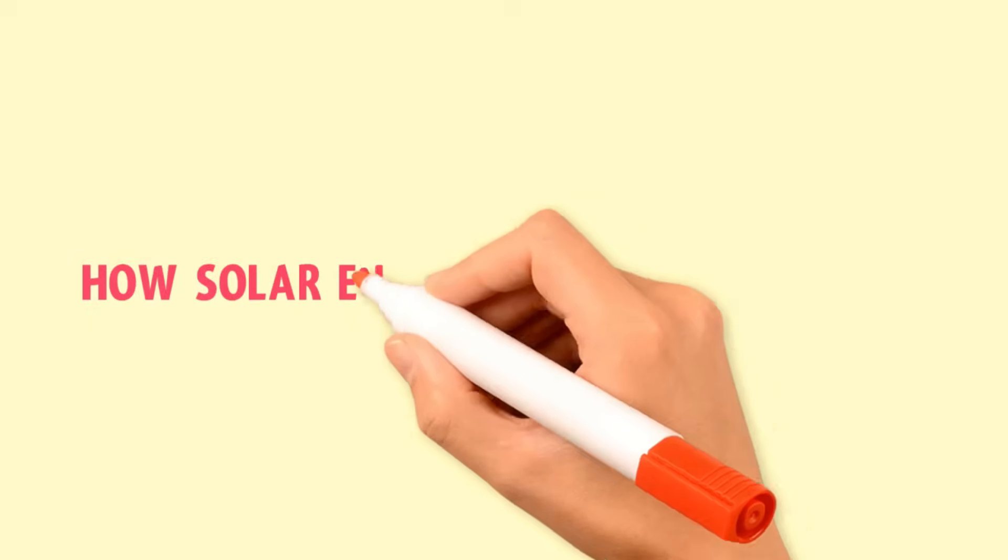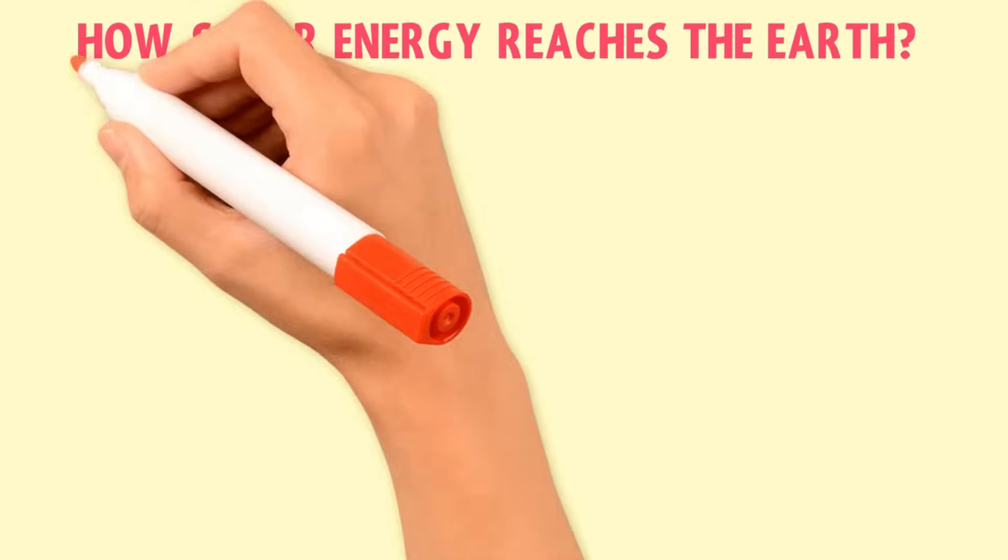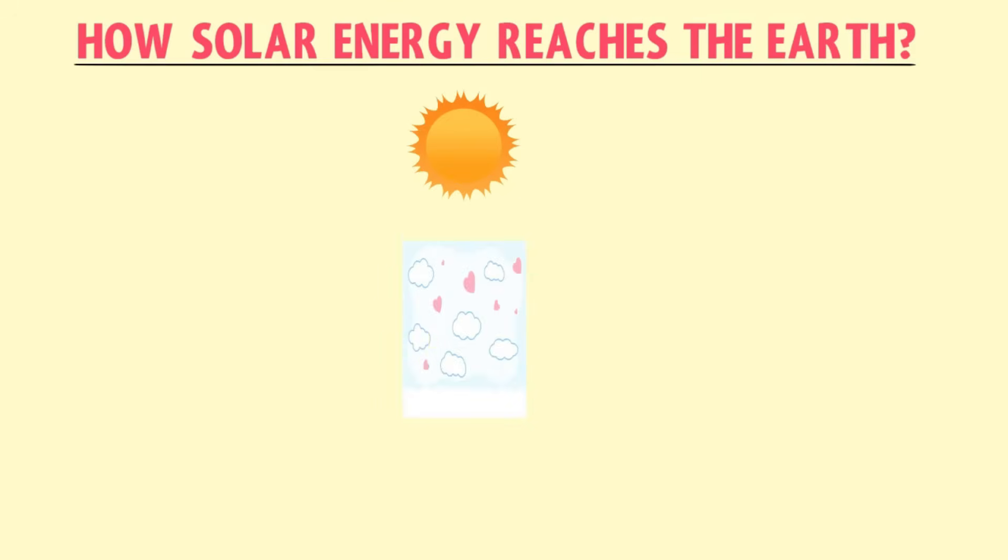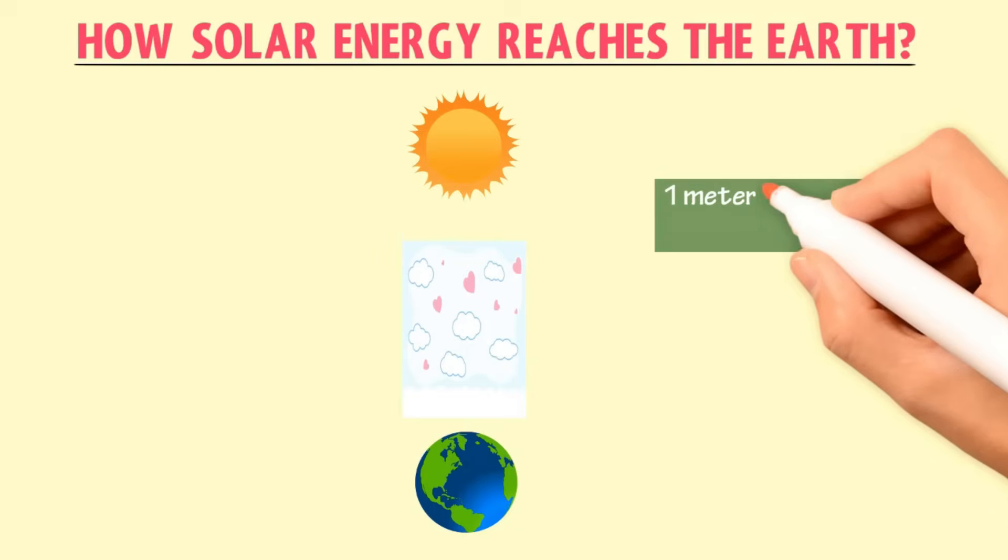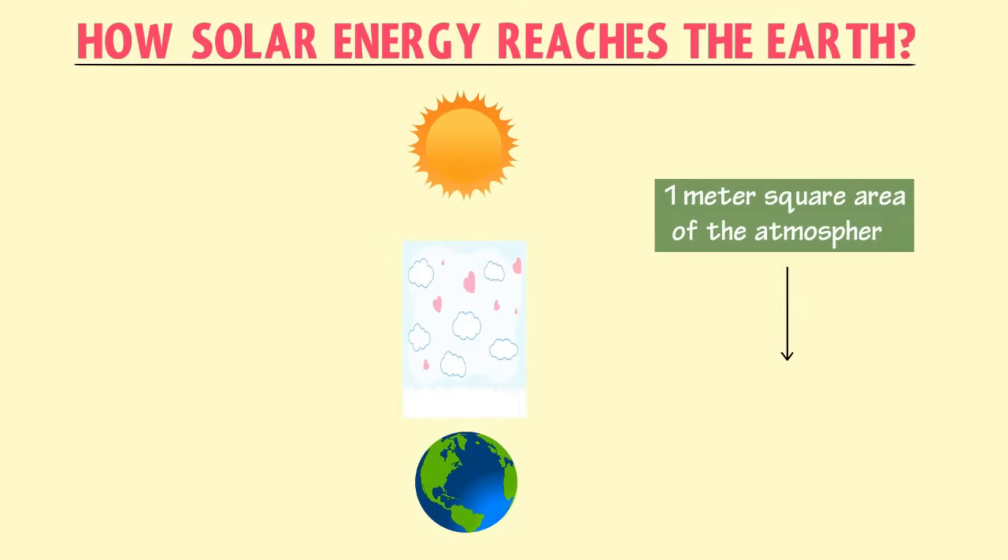Do you know how solar energy reaches the Earth and how much solar energy reaches the Earth? As we know that light travels in the form of waves, solar energy reaches the Earth in the form of sunlight. One meter square area of the atmosphere receives 1.4 kilowatt energy, which is also known as the solar constant.